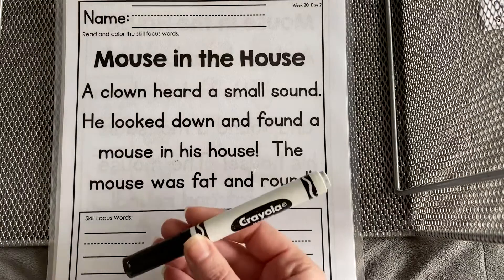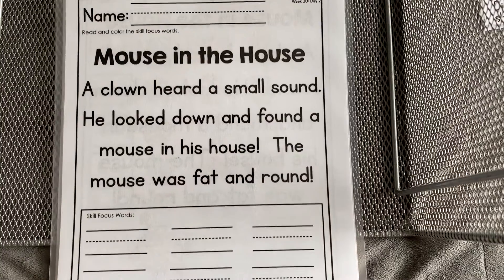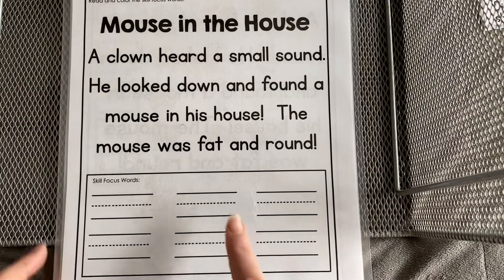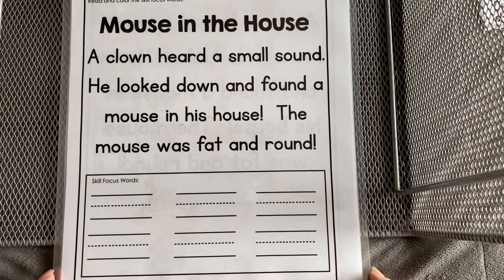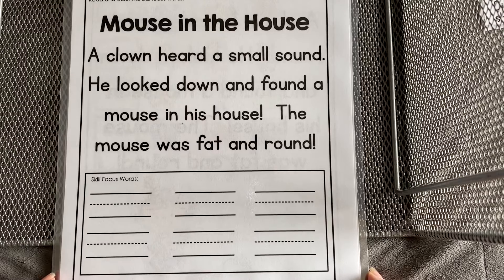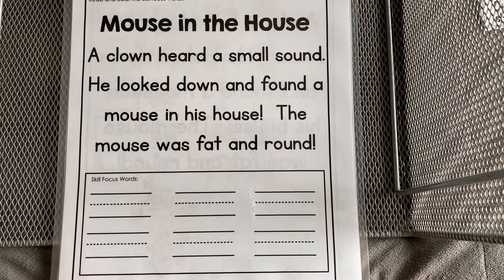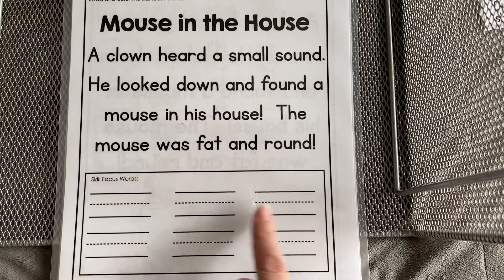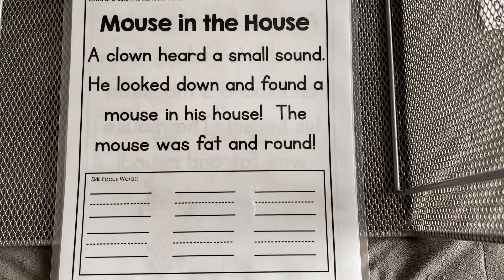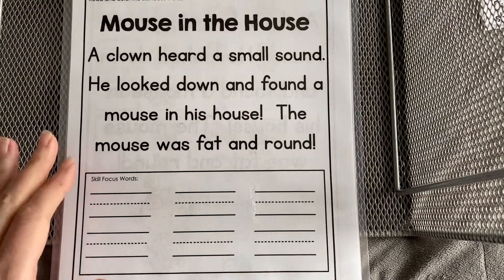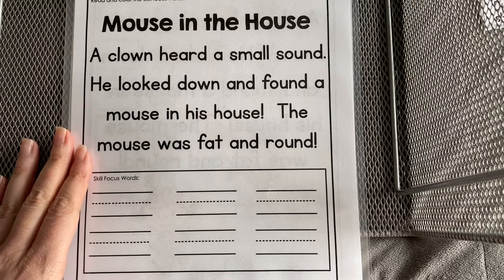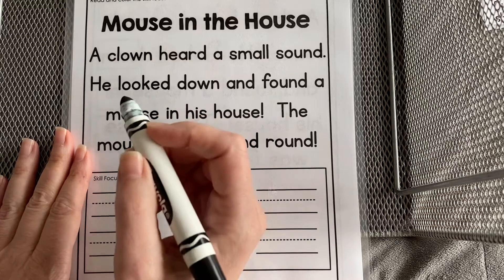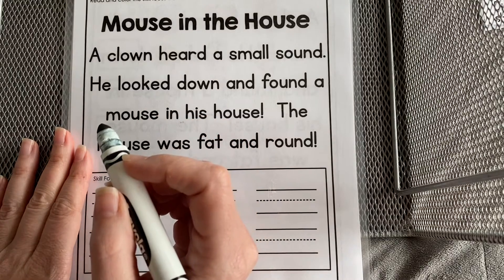Here's where you're going to need a marker or a pencil. I'm using a marker because my paper is laminated — it's covered with plastic — but you can use a pencil at home. We're looking for our skill focus words. You're going to write those down below. I'm going to underline them and you'll go ahead and write them. Remember, we are looking for our OU and OW words.